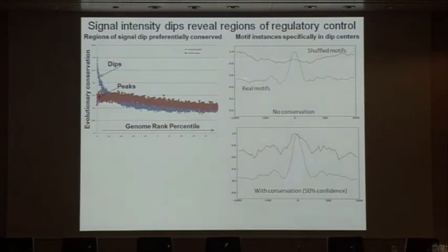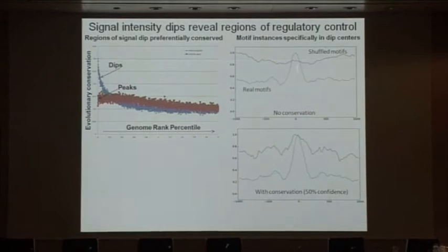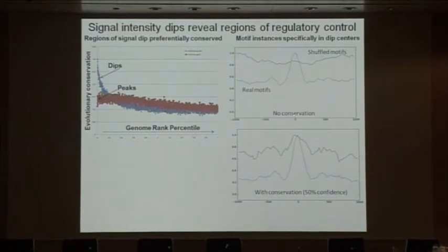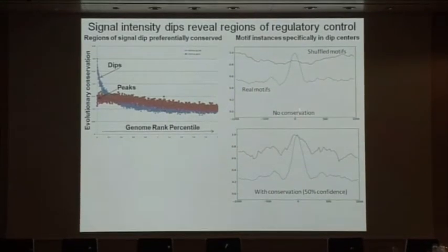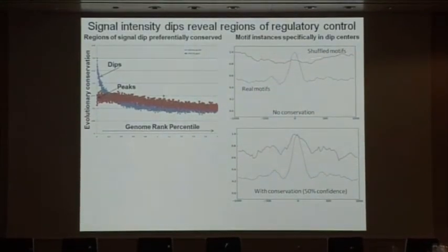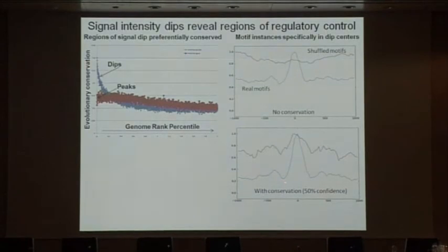We can also find that regulatory motifs are very strongly enriched in the center of those dips, which is not true for shuffled motifs. And if you include conservation, the signal becomes much stronger.